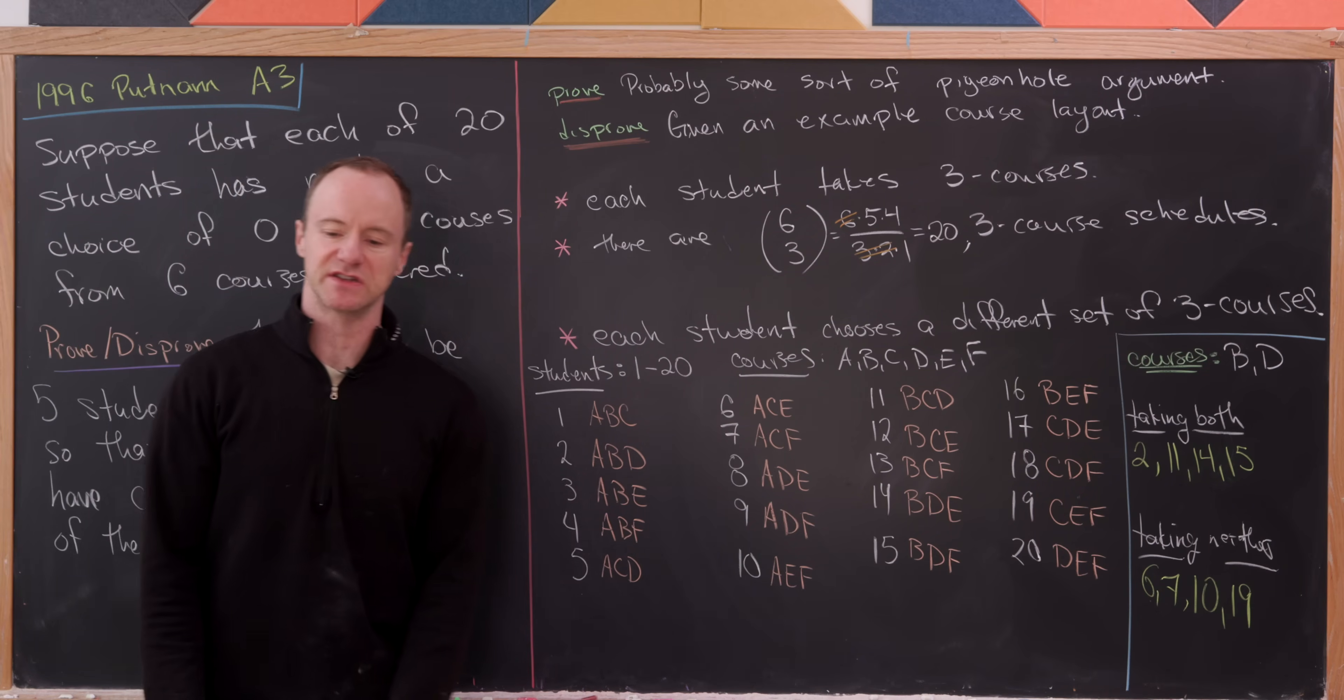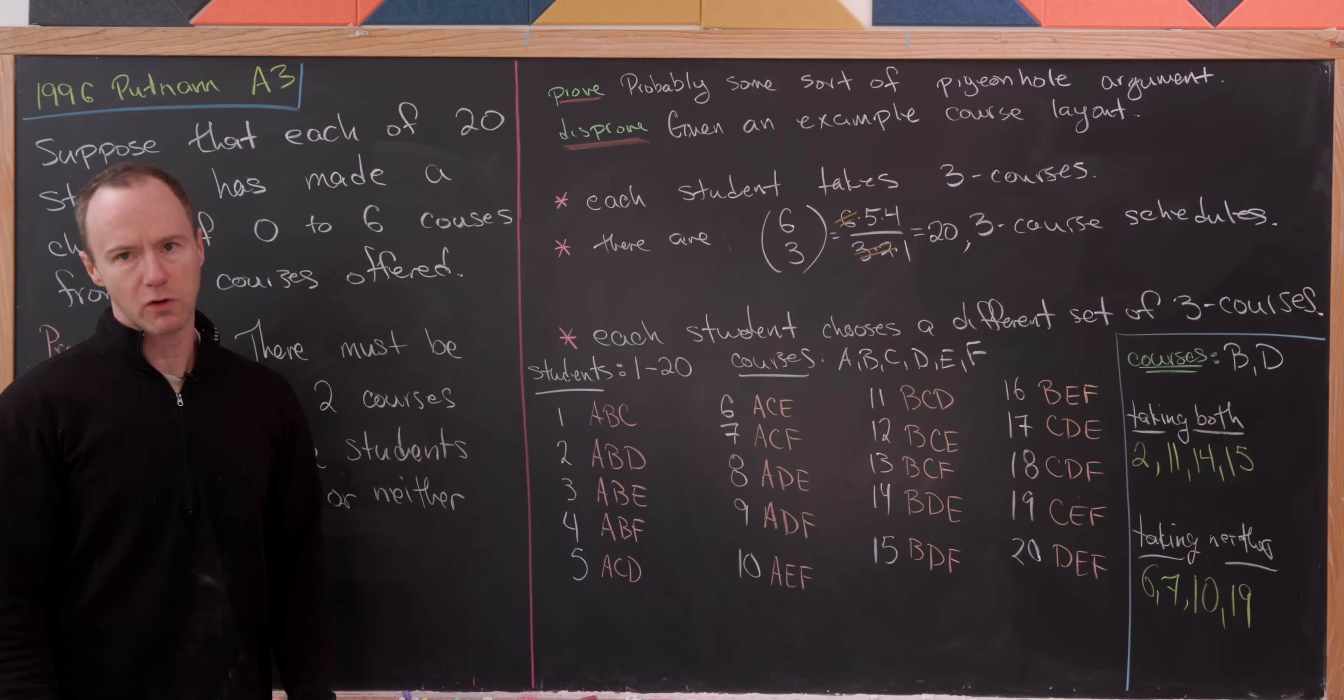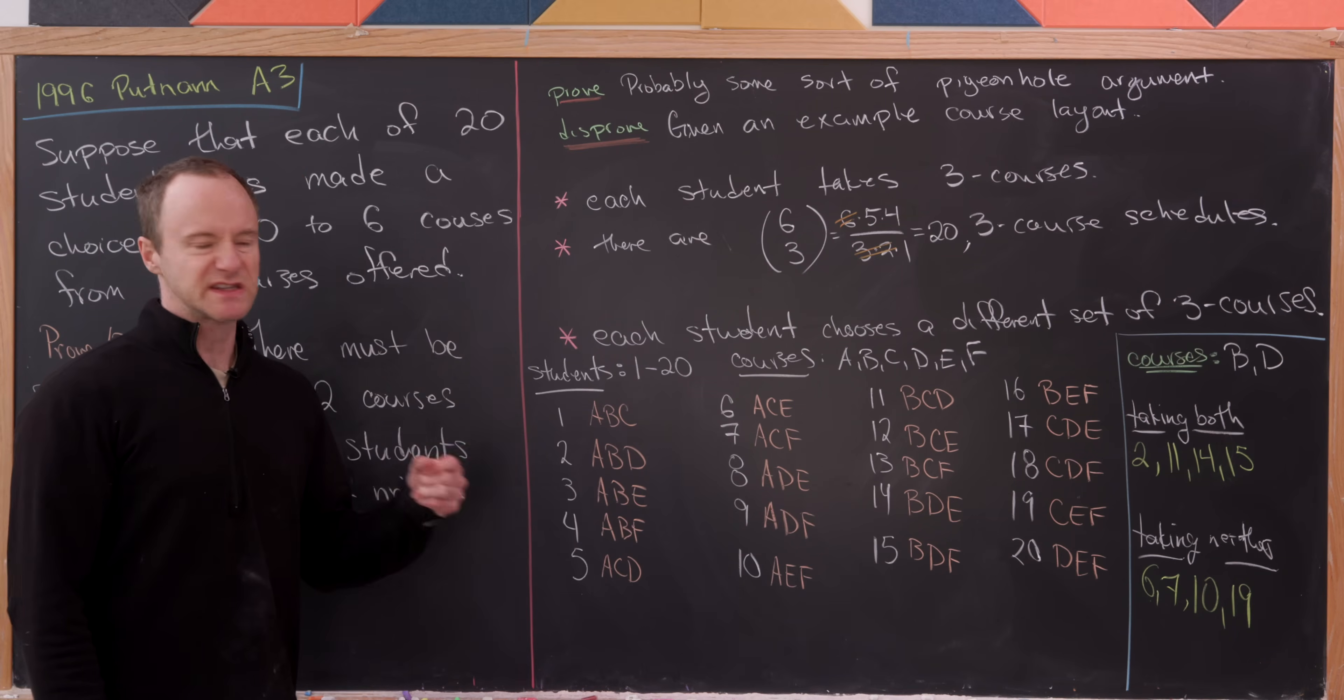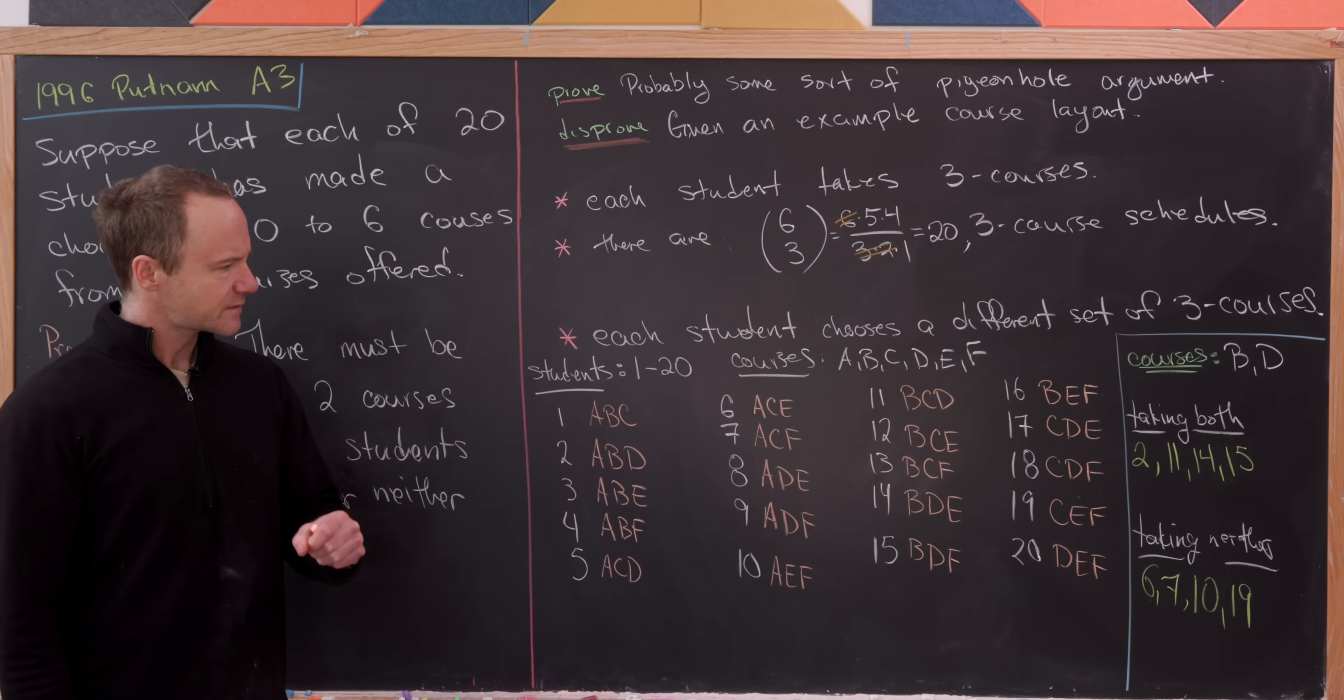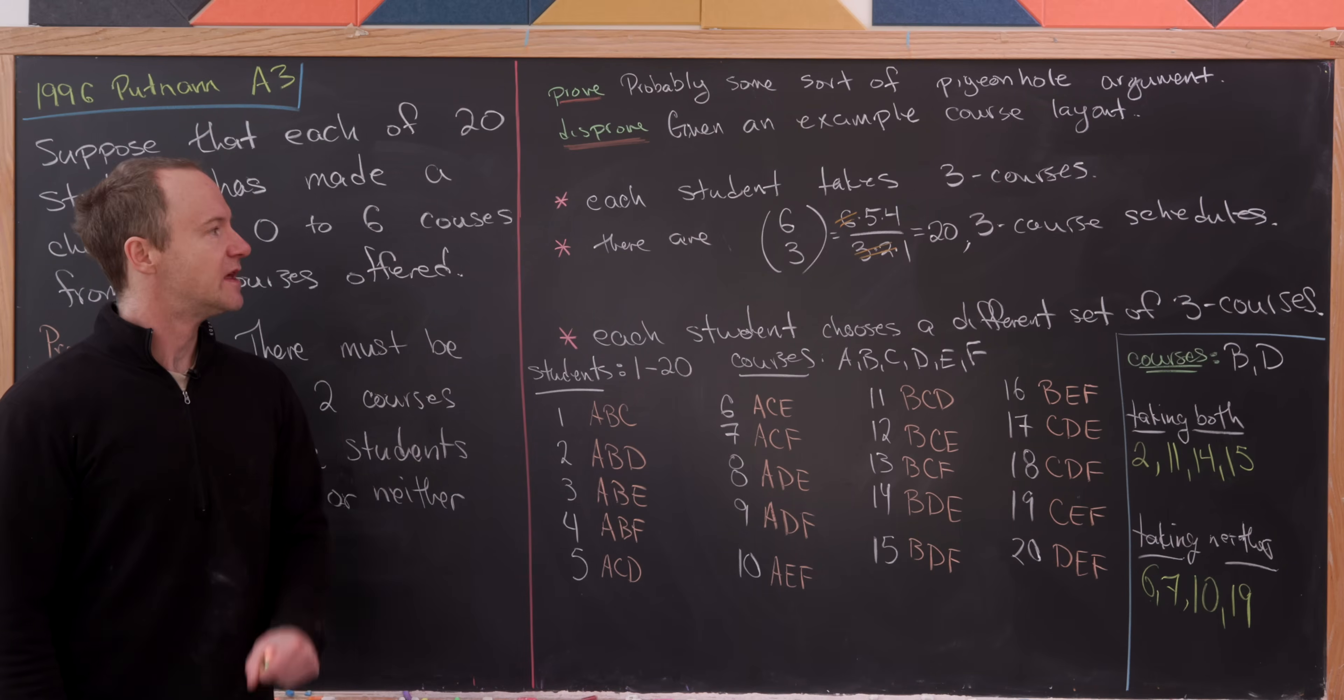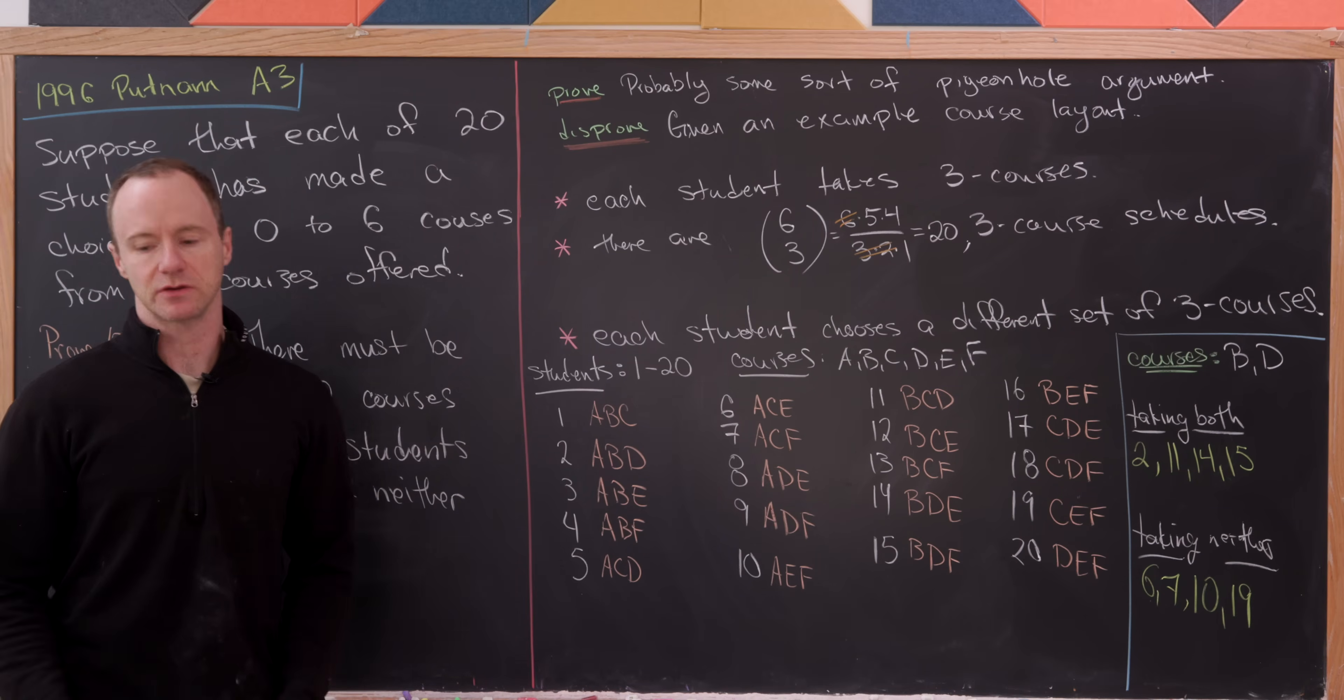And now there are two ways to finish this off. We could write down a general argument with maybe some general names for the courses. And we will do that. Or we could make some sort of argument where courses B and D were chosen at random. And so you could just have a renaming of the courses and achieve the same kind of thing. It would be like some sort of permutation of this list right here.